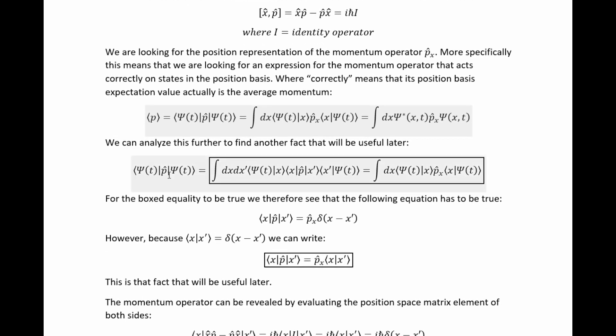In order to work that out, we need first to extract another fact from this valid starting definition. What we can do is we can insert complete sets of states in between the operator and these states here. When we do that, we arrive here. Now we know that we're looking for an expression of this form, and that whatever value we have to make this px hat be in order to make it equal to this, and therefore this, is the correct one. But in order for this to have a chance of being equal to this, we need this relation to be true.